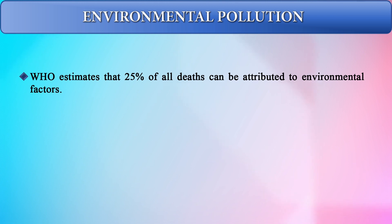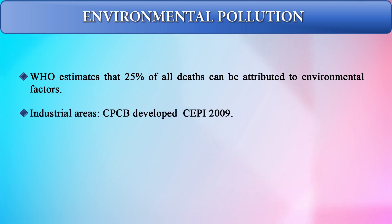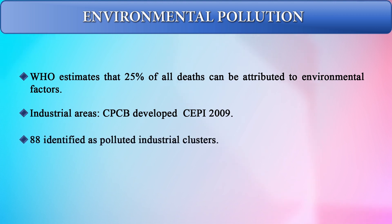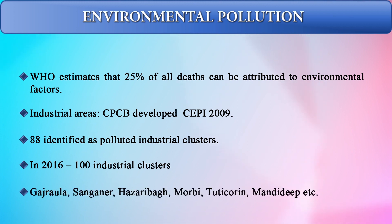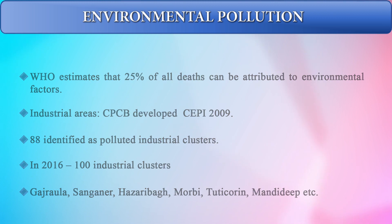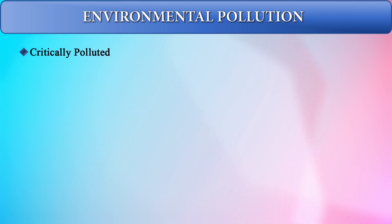There are several polluted industrial areas in India. The Central Pollution Control Board developed the Comprehensive Environmental Pollution Index in 2009, in which 88 industrial sectors were identified as polluted. By 2016, this number rose to 100 industrial clusters, mostly centered around Gajraula, Sanganer, Hazaribagh, Morbi, Tuticorin, and Mandidi districts — all critically polluted.